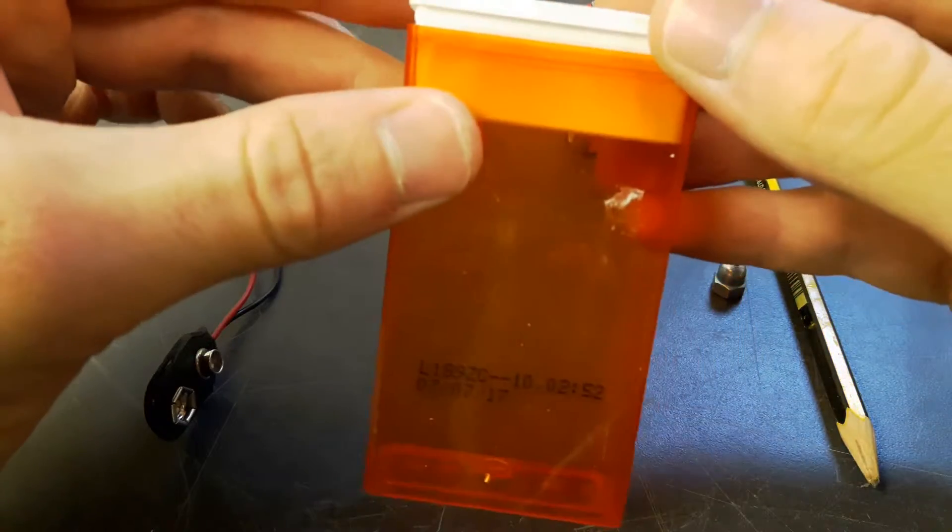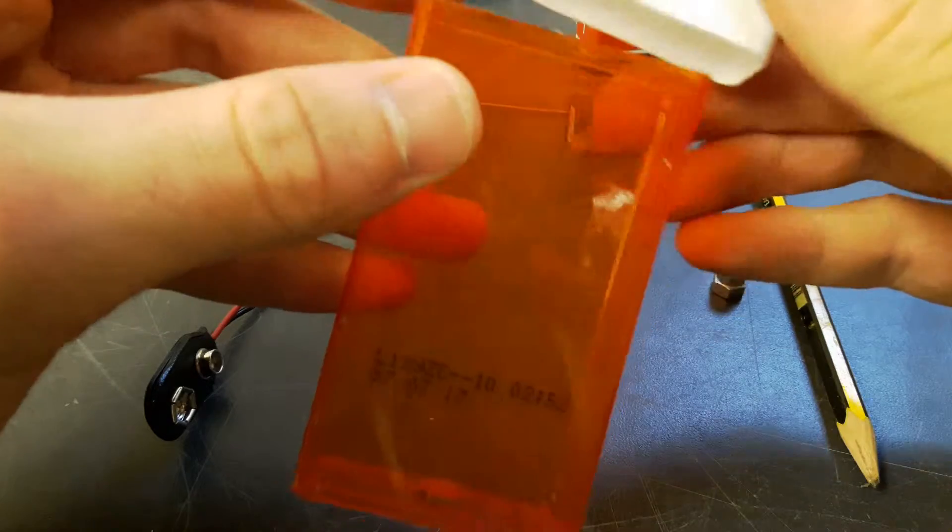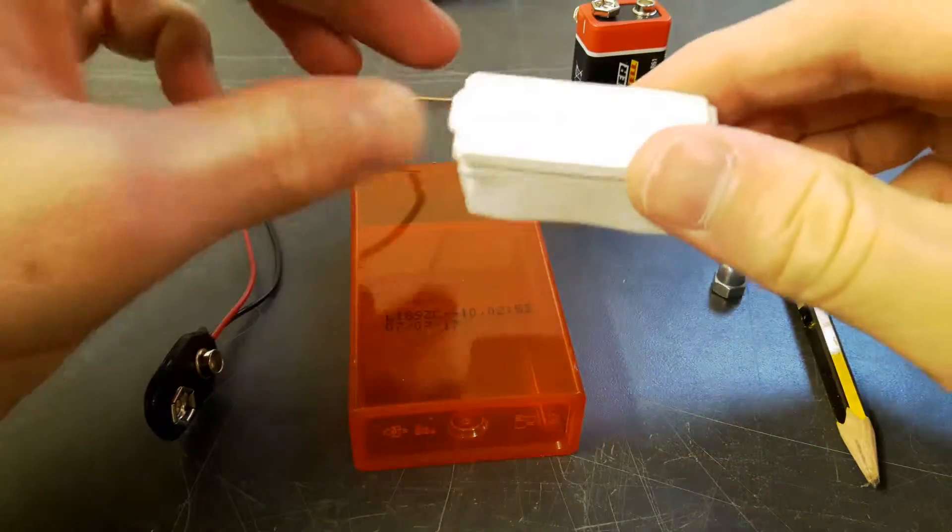So the first thing I did was I put the banded wire through the plastic and fixed it with hot glue.